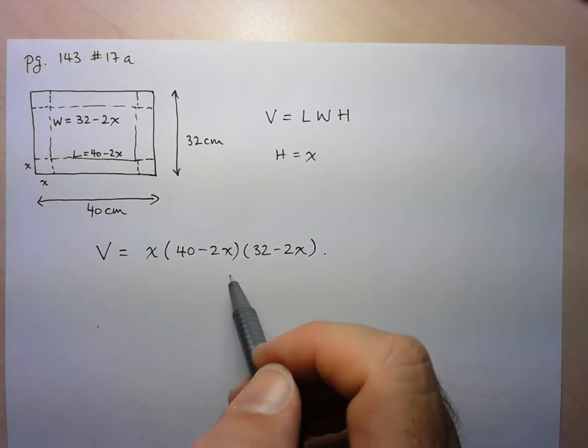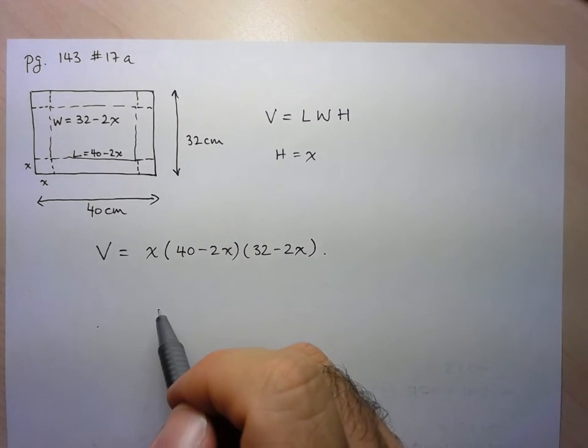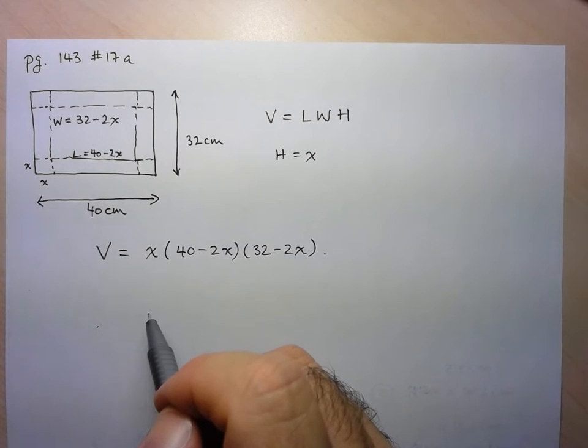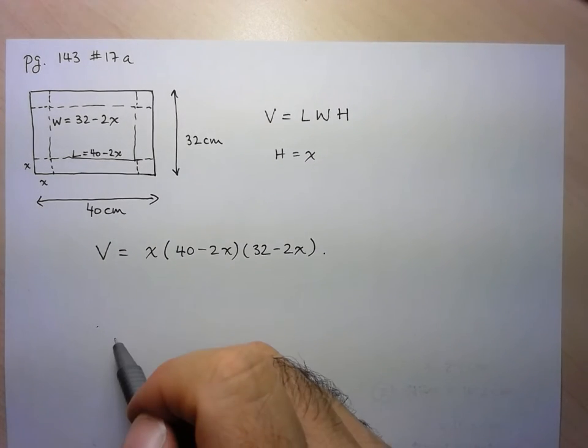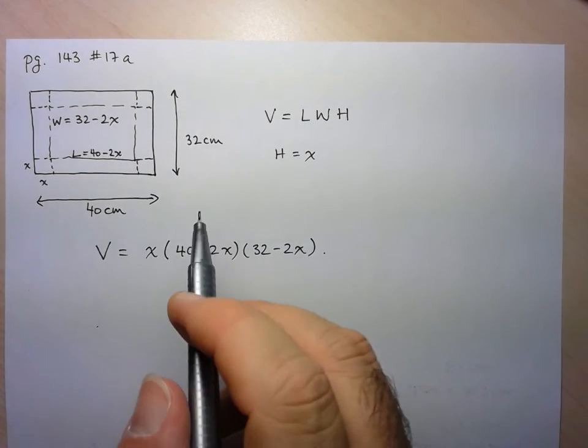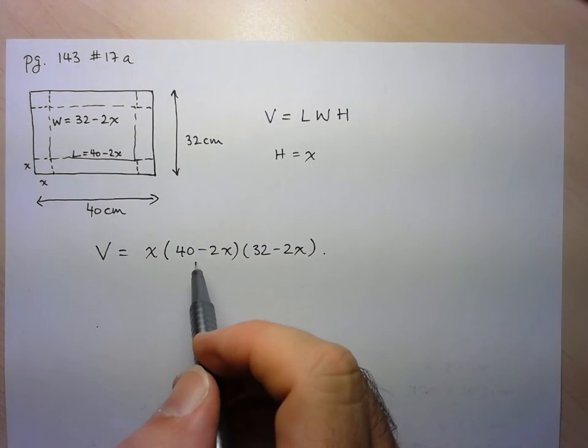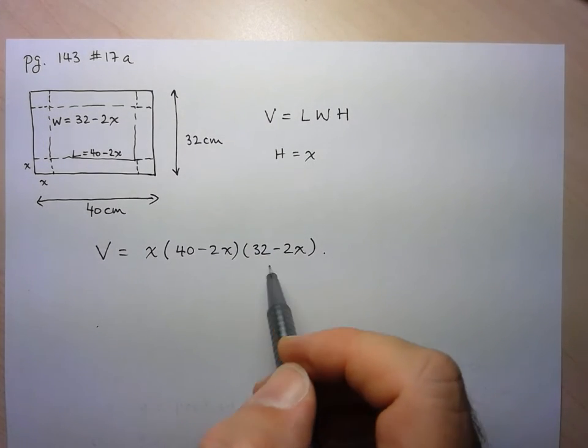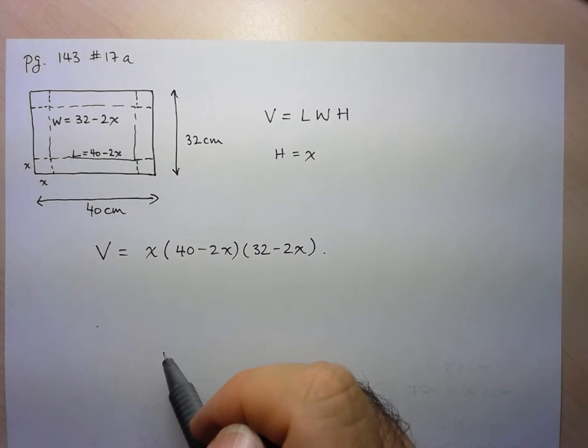So for example, if any of them are negative, you know, you'd be eliminating them because you can't have a negative height. And if any X value makes either of these dimensions negative, you also need to eliminate those.